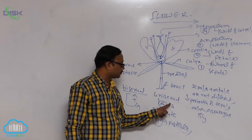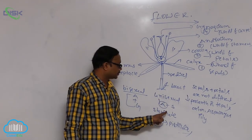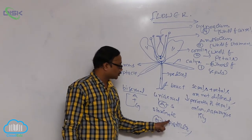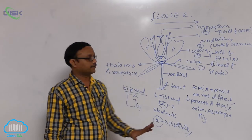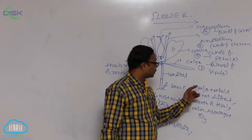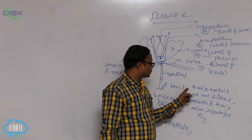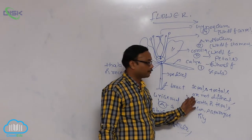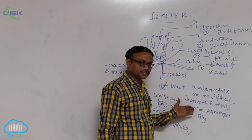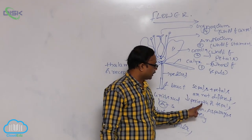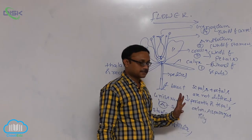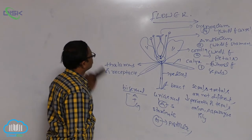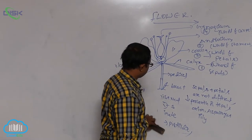In summary: if both androecium (male) and gynoecium (female) are present, the flower is bisexual. If only androecium is present, it is a staminate flower. If only gynoecium or pistil is present, it is a pistillate flower. Perianth means sepals and petals are not differentiated; examples are onion, asparagus, and lily.